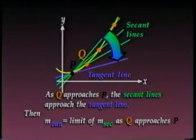More specifically, we can say that the slope of the tangent line is the limit of the slopes of the secant lines as q approaches p.